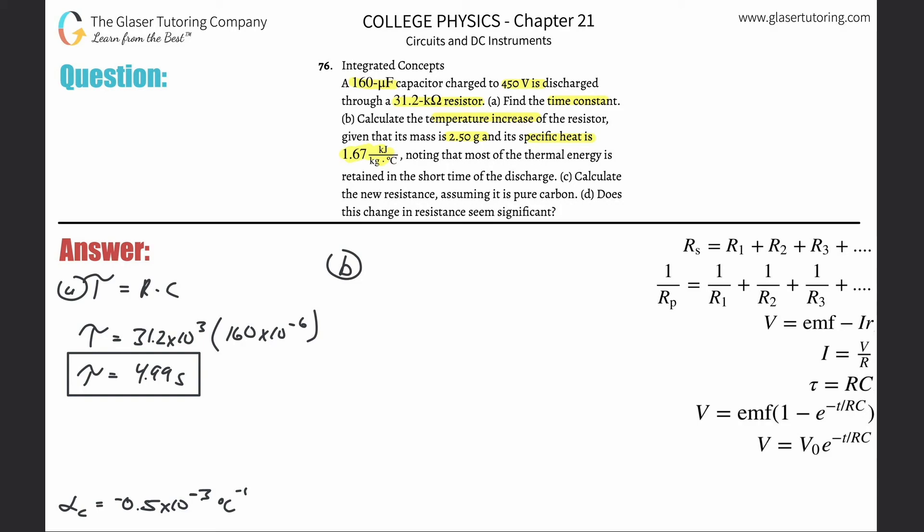Okay, so what we now need to do is we need to calculate the energy that is being released. We can do that with the following formula: energy is equal to one half CV squared.